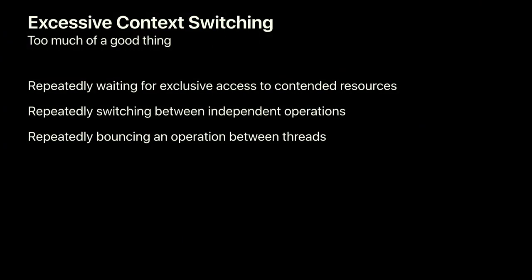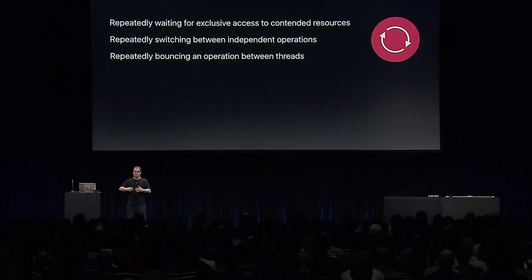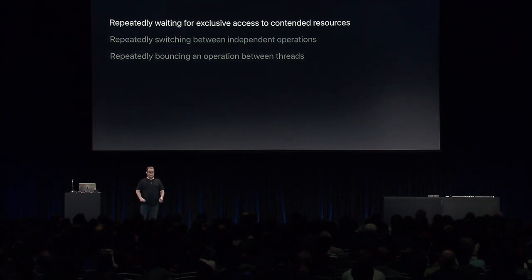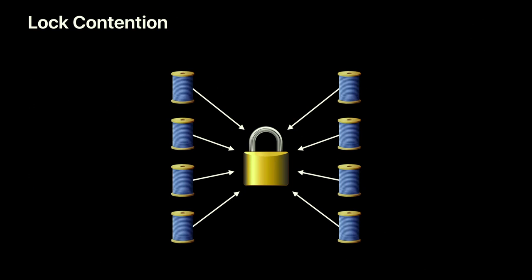There are three main causes of excessive context switching: repeatedly waiting for exclusive access to contended resources; repeatedly switching between independent operations; and repeatedly bouncing an operation between threads. The word 'repeatedly' is intentional — context switching a few times is fine, that's how concurrency works. But when you repeat it too many times, the costs start to add up. Let's look at the first case: exclusive access to contended resources. The primary case is when you have a lock and many threads are all contending to acquire it.